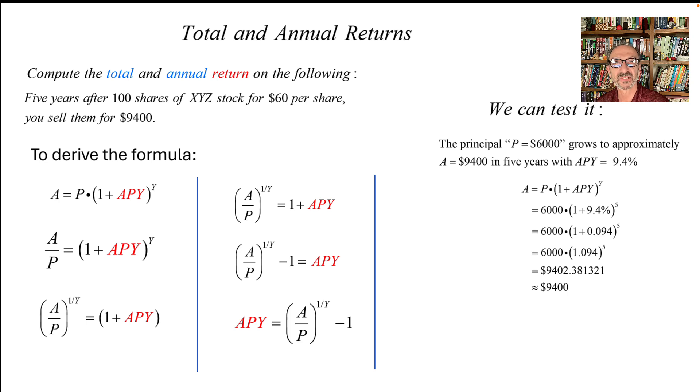9.4 percent is 0.094. Then I could combine them together as 1.094, which is less typing on the calculator. And I get the following, but notice this answer is not exactly $9,400. It has $2 something extra, but it is approximate to our answer.